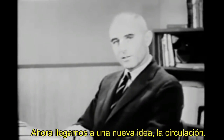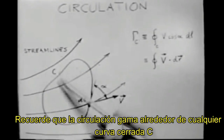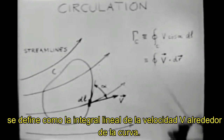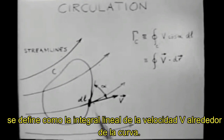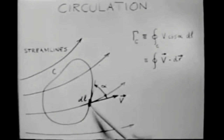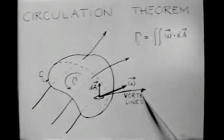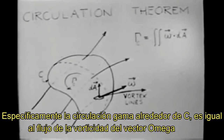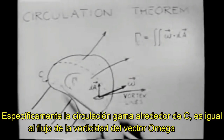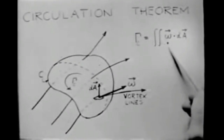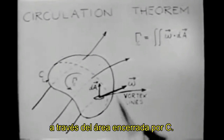Now we come to a new idea — the circulation. The circulation gamma around any closed curve C is defined as the line integral of the velocity v around the curve. The circulation theorem relates the circulation around any closed curve C to the vorticity passing through any area bounded by C. Specifically, the circulation gamma around C is equal to the flux of the vorticity vector omega through the area bounded by C.